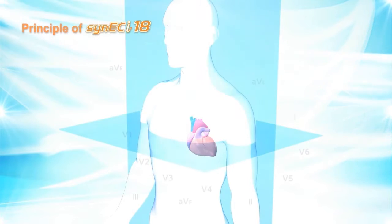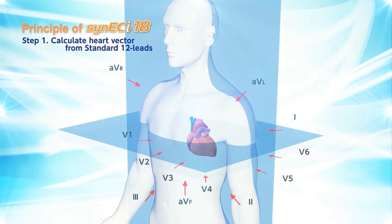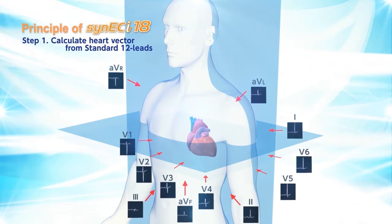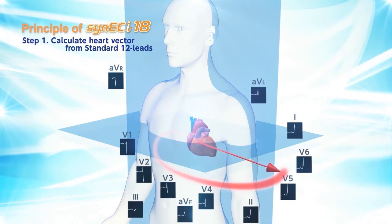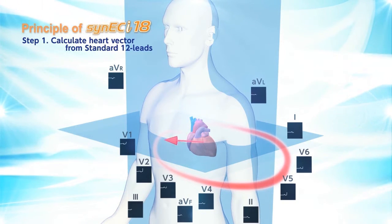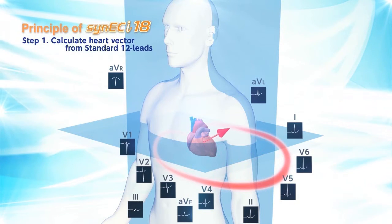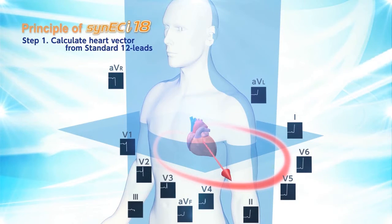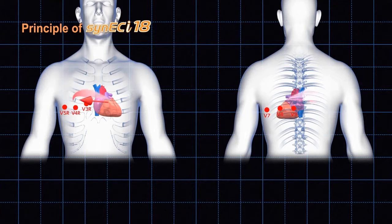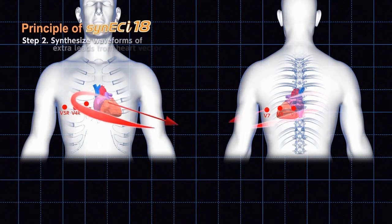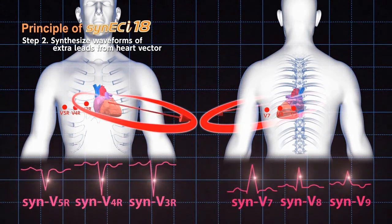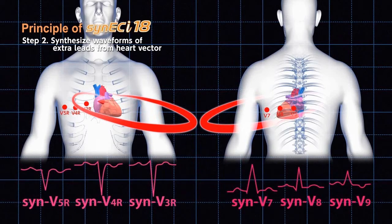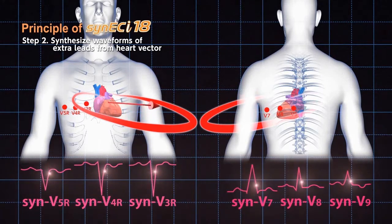Cinec Eye synthesized 18-lead ECG is based on a Nihon Koden patented technique. The synthesized 18-lead ECG is obtained in two steps. First, a heart vector is calculated from the actual 12-lead ECG. Next, waveforms for leads V7, V8, and V9, as well as V3R, V4R, and V5R, are synthesized from the calculated heart vector.